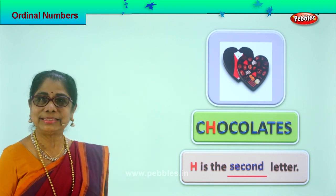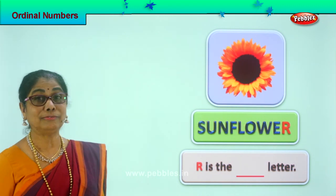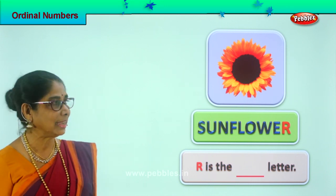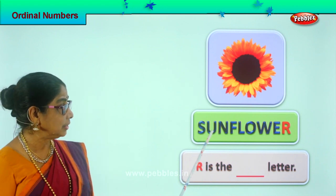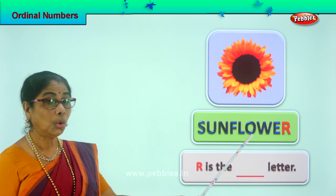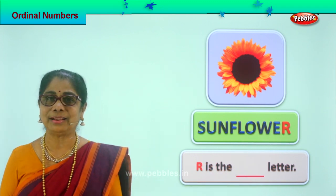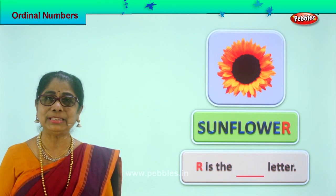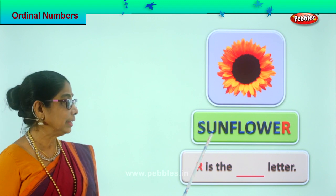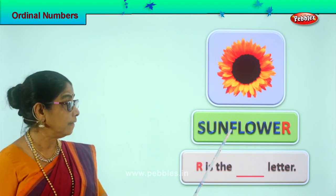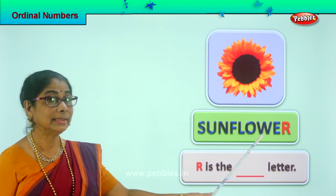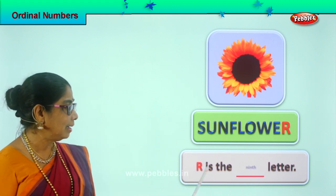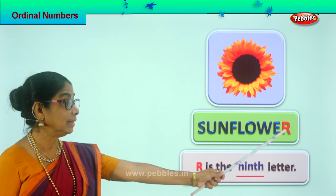Shall we take another picture? Look what you have — beautiful lovely yellow sunflower! Yes, the biggest flower. Let's spell sunflower: S-U-N-F-L-O-W-E-R. Which is the letter that is colored? R. Now in ordinal numbers, what is the position of R? First, second, third, fourth, fifth, sixth, seventh, eighth — R is the ninth letter. R is in the ninth position.